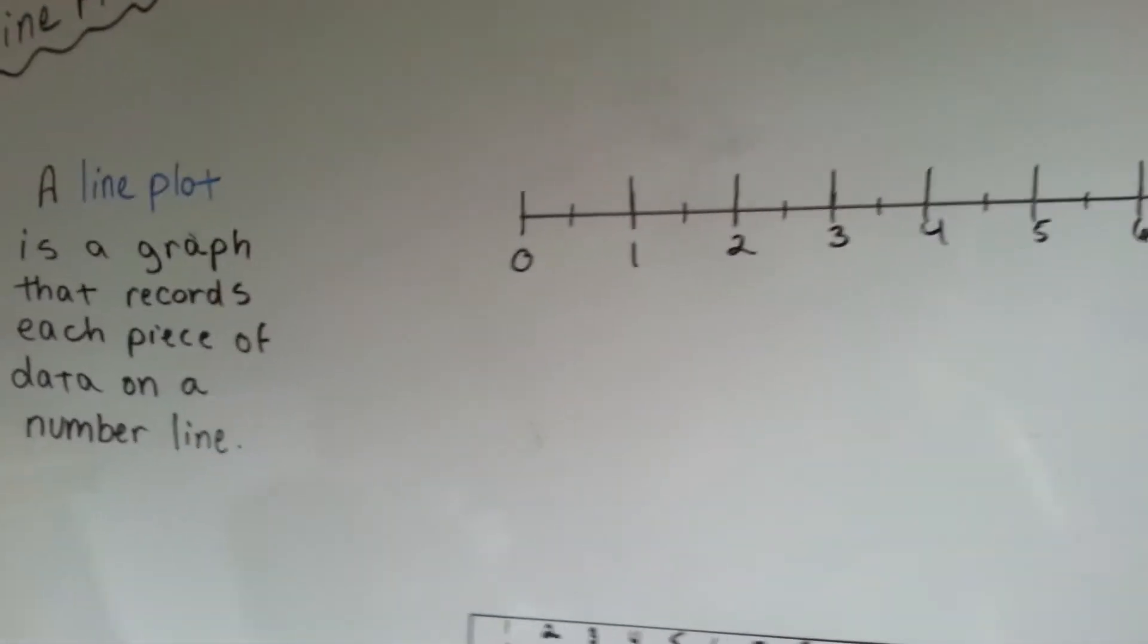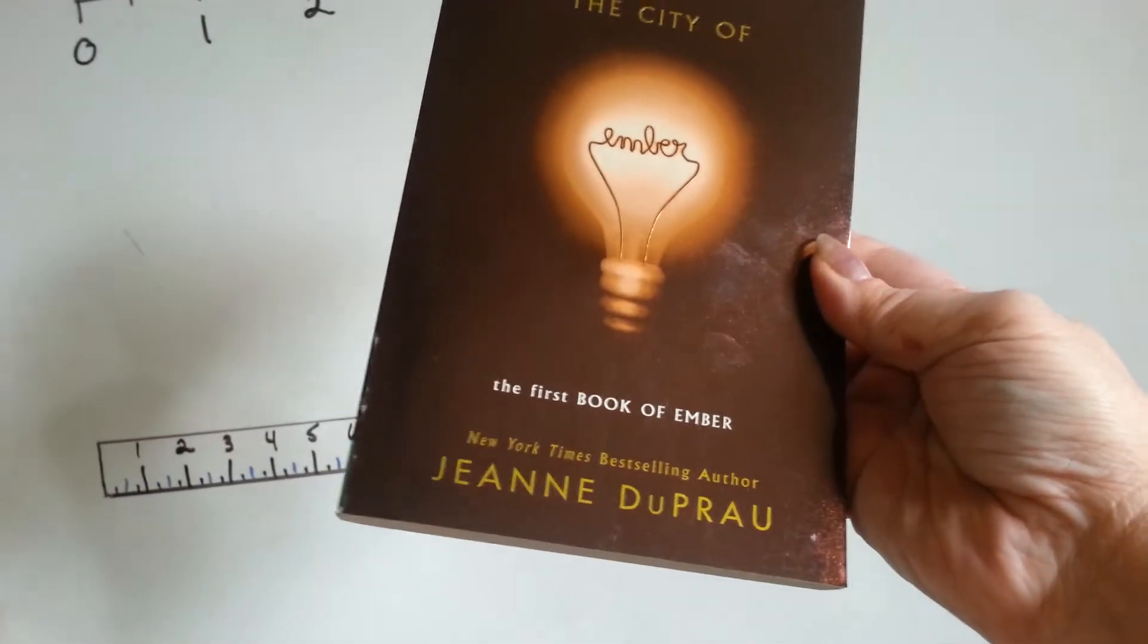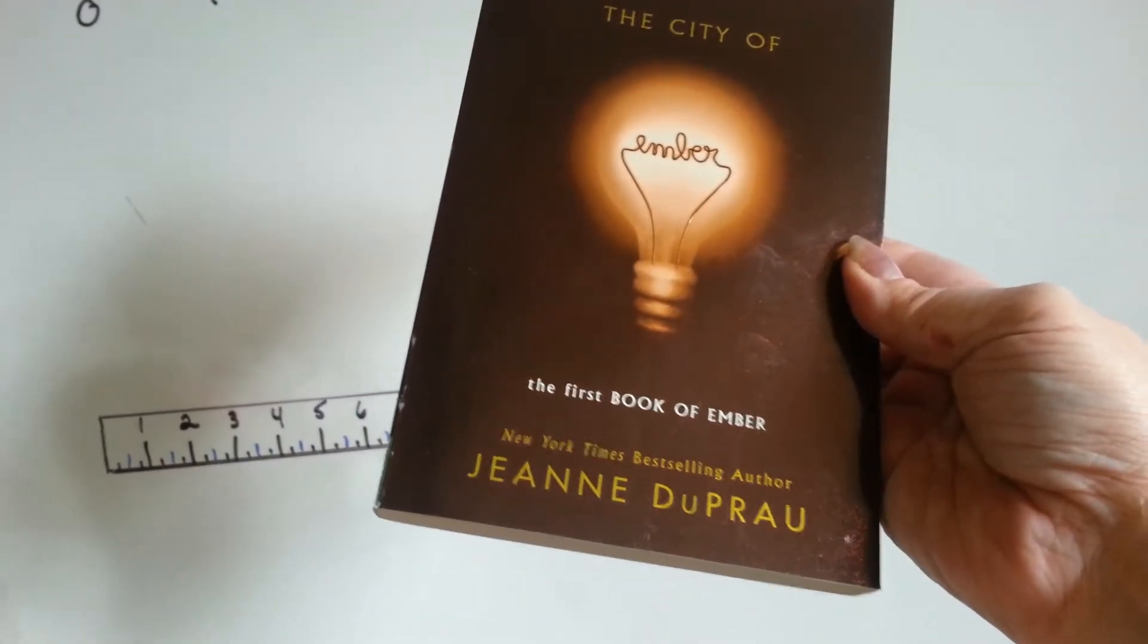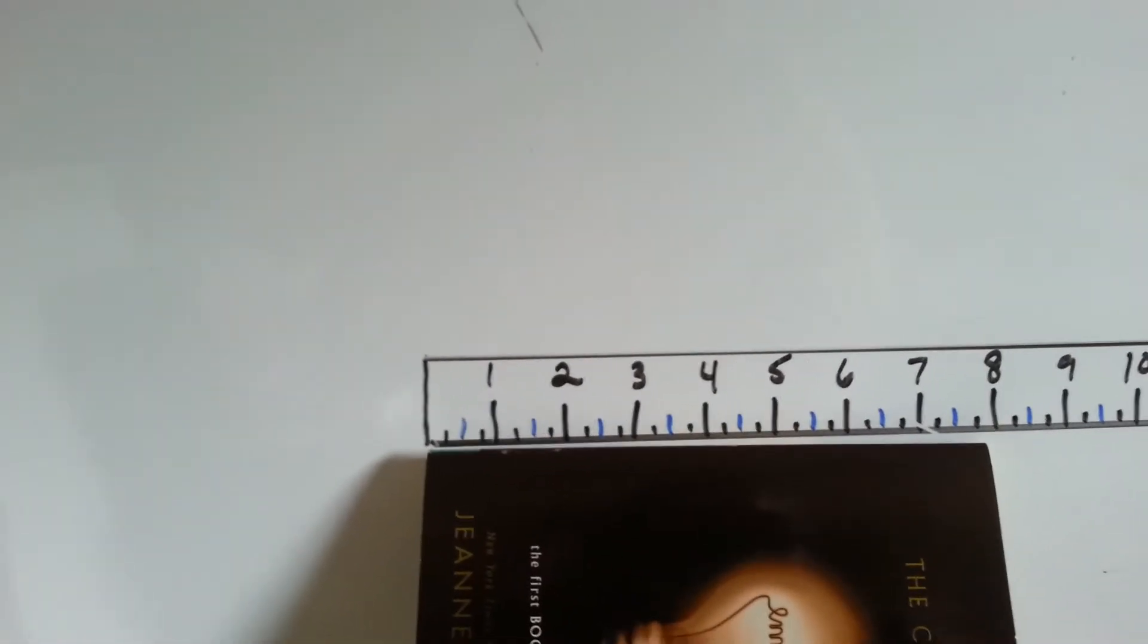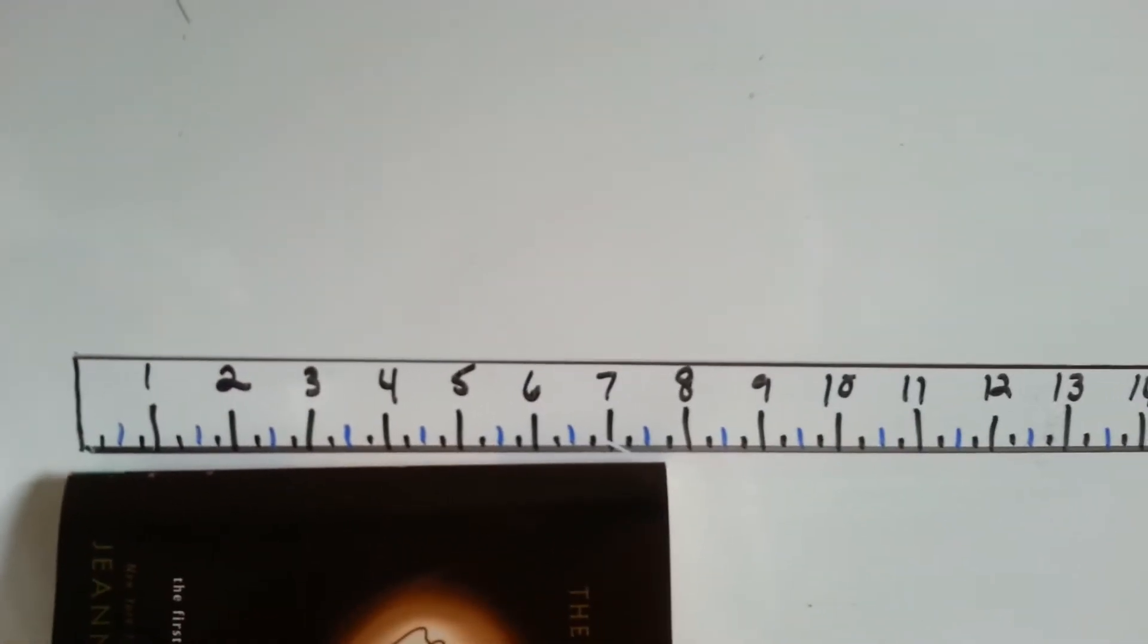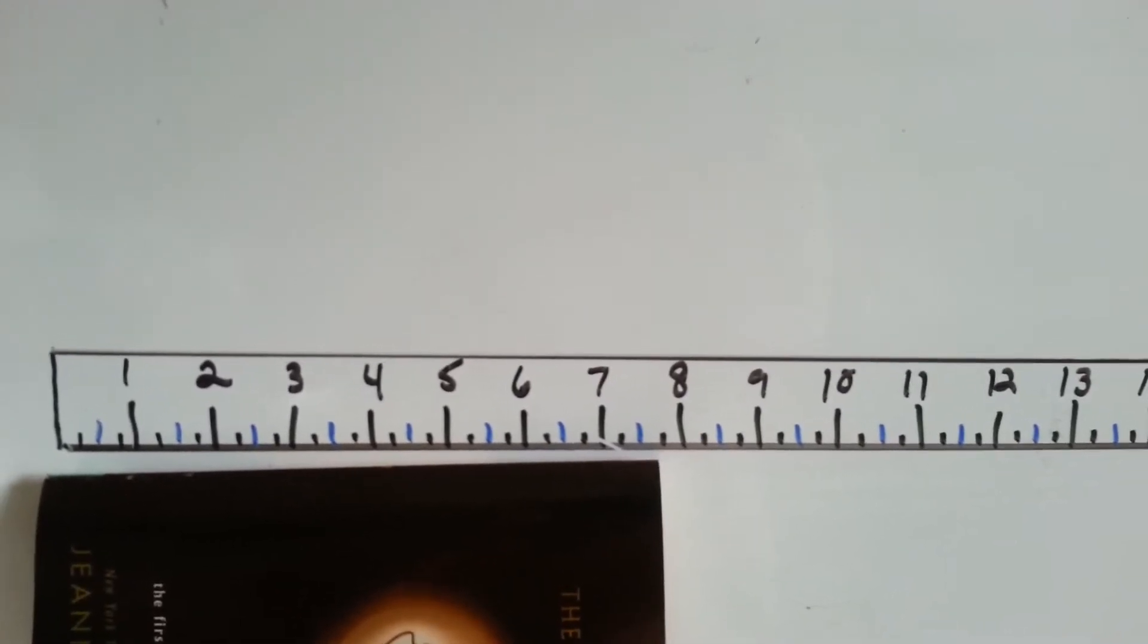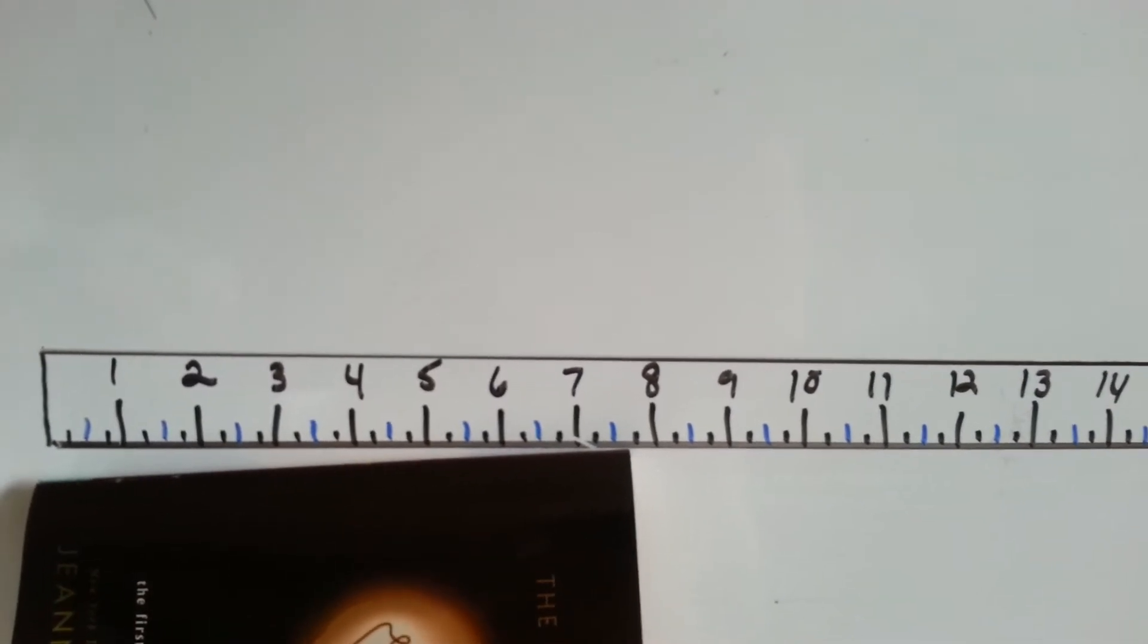Next book, The City of Ember. The first book of Ember. There's four in this series by Jean Dupreau. Let's measure this one. This is a paperback also. What do you think is going to happen? Ooh, this one's a little more than seven and a half. Is it closer to seven and a half or eight? I think it's still closer to seven and a half. It's not quite at seven and three-fourths. So, I'm going to say that The Book of Ember is also a seven and a half. That's going to get another x.